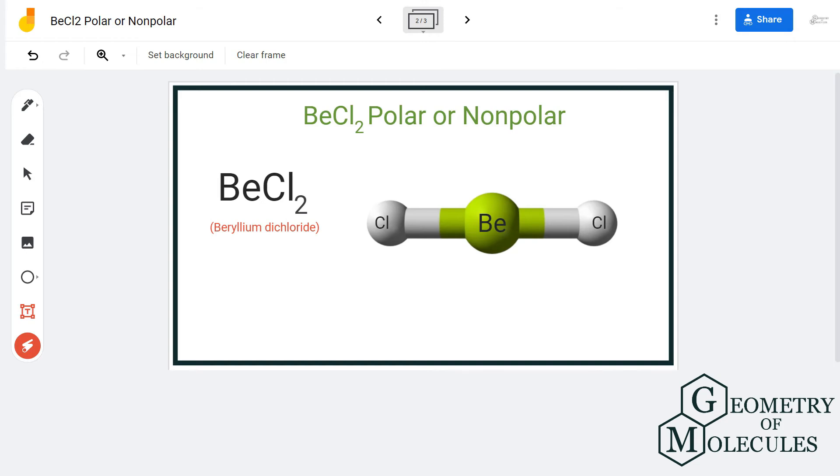This means the net dipole moment will be zero. As the net dipole moment in this molecule is zero, there is no formation of poles in this molecule, and hence BeCl2 is a nonpolar molecule.